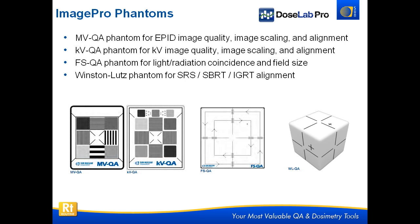DoseLab can also come with ImagePro Phantoms made by SunNuclear. These are not required, but they're extremely nice phantoms. We have the MVQA Phantom, which does all of your EPID image quality, image scaling, and alignment. A KVQA Phantom for KV image quality, scaling, and alignment — very similar, just one for MV and one for KV. The field size QA Phantom has hash marks printed on it so you can do your light field size measurements, and you can also do light radiation field coincidence because it has embedded BBs for both 10x10 and 15x15 fields.